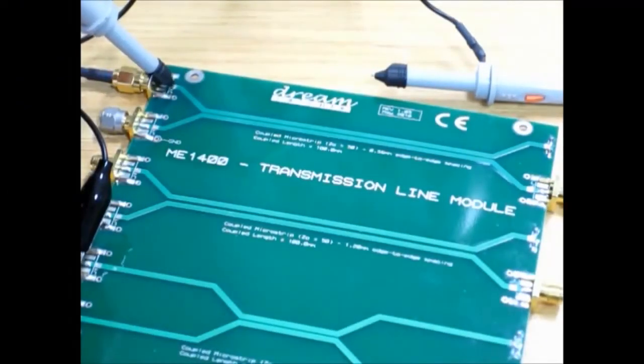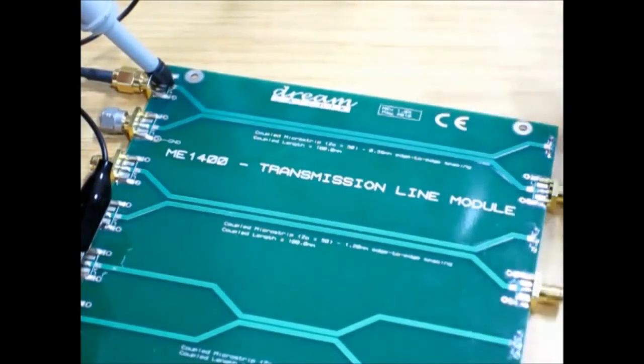Next, we shall investigate the far end crosstalk. Where's the location to probe? To view the crosstalk signal on the adjacent line at the far end, probe at this point.